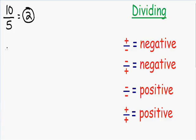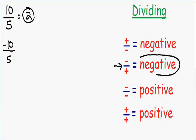But let's say we have a negative ten being divided with a positive five. Now we have one negative number and one positive number — a negative on top and a positive on the bottom. This is going to give us a negative answer, so instead of positive two, our answer is going to be negative two.